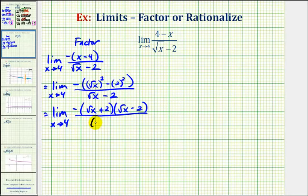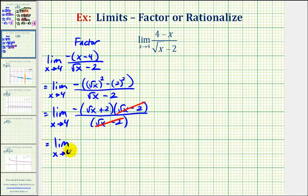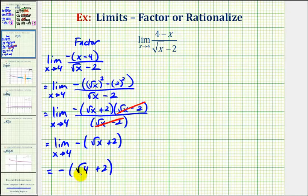In our denominator we still have one factor of the square root of x minus two. Notice how now that we've factored the numerator, we can see we have a common factor of the square root of x minus two, which simplifies to one. So now we have the limit as x approaches four of the opposite of the square root of x plus two. Now we can perform direct substitution: we have the opposite of the square root of four plus two. Since the square root of four is equal to two, we have the opposite of positive four, or negative four as our limit — which is what we saw from the graph.